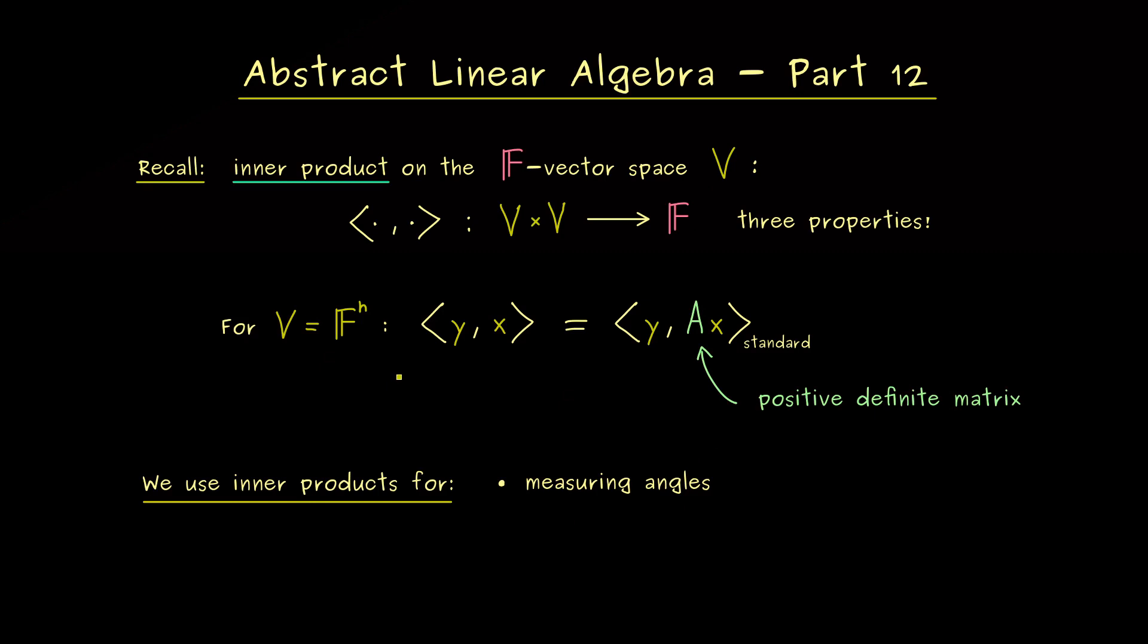Hence, with an inner product, the vector space V becomes much more interesting because now it's a geometric object. And now exactly there the Cauchy-Schwarz inequality comes in because it will explain what we actually mean by angles in V. So you see, it's worth it to have a whole video about this inequality here.